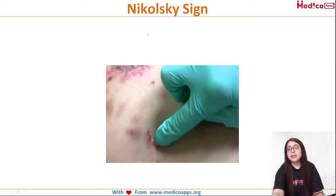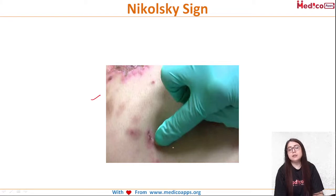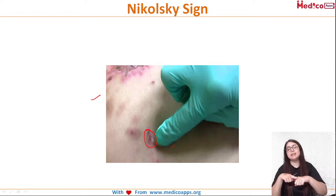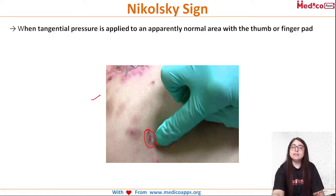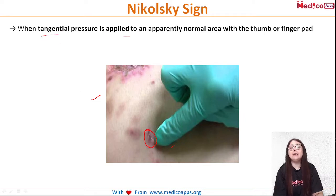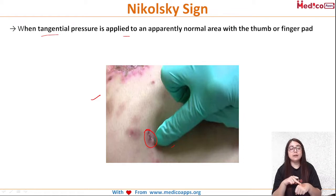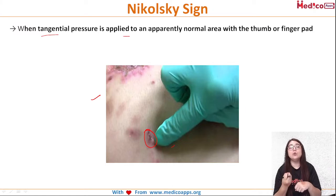In this image, you can see that the clinician is applying tangential pressure around the lesion. Nikolski sign states that when you apply tangential pressure to an apparently normal skin, the layer tends to slip off, and a new lesion appears.